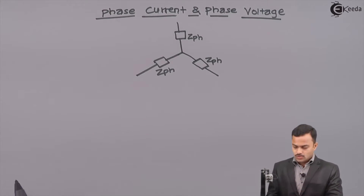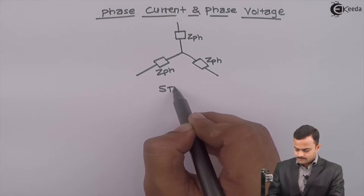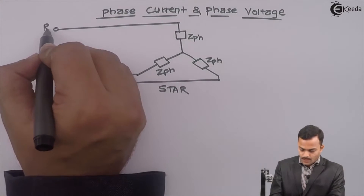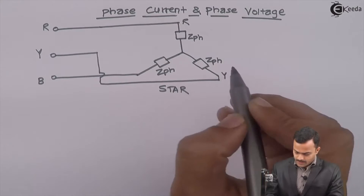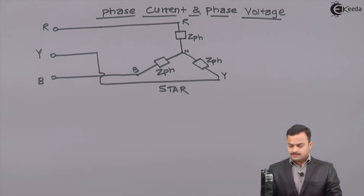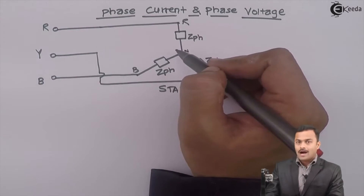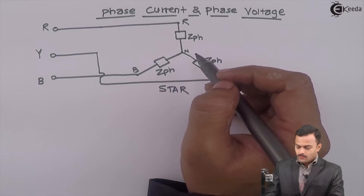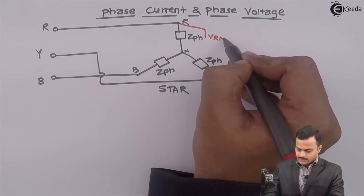The nature of impedance — meaning the power factor — of all three impedances is also the same. This balanced three-phase star connected load is driven by a three-phase supply R, Y, B. A phase is nothing but a circuit. This neutral point divides it: this portion is called R phase, this portion is Y phase, and this portion is B phase.